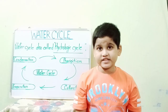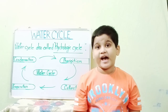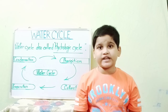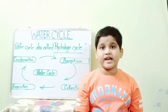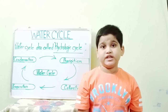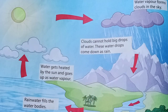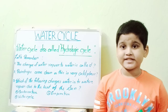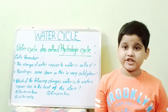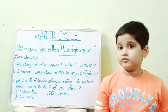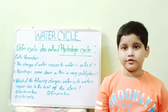Evaporation, condensation, precipitation, and collection together form the water cycle. The water cycle is powered by the sun's energy and by gravity. The sun kick-starts the whole cycle by driving evaporation from the earth. Hope you enjoyed today's episode. Please like, share, and subscribe to my channel, and don't forget to press the bell icon so you won't miss my latest videos. Thank you.